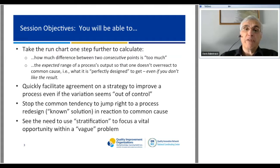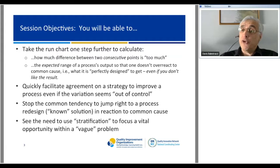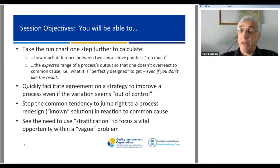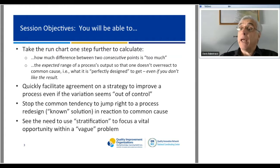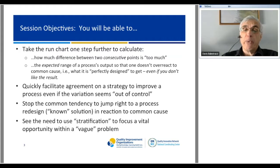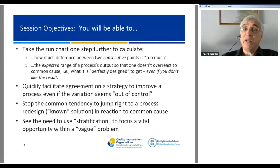As a result of this session, you'll be able to see how easy it is to calculate how much difference between two consecutive points is too much—this month versus last month, or this week versus last week. Of course they're not the same number, but how much of a difference is too much? Where is the threshold between common cause and special cause? You can also calculate the expected range of your process's output, so you don't overreact to common cause. What you'll calculate is what your process is perfectly designed to get, even if you don't like it.